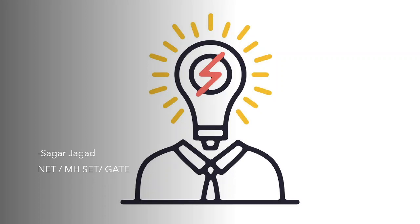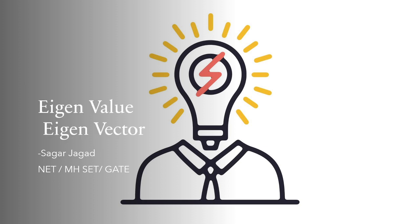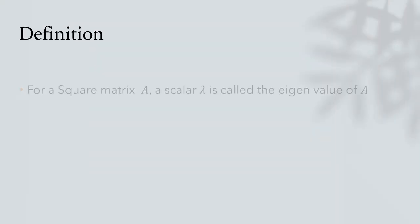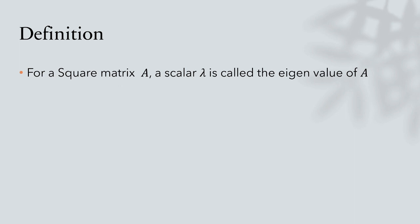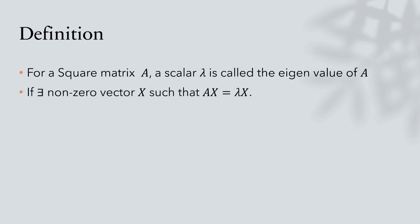Hello dear friends, welcome to this video. In this series I'll be discussing some standard reference book problems for the topic of eigenvalues and eigenvectors. First let me define what is an eigenvalue and eigenvector. The definition goes like this: for a square matrix A, a scalar lambda is called the eigenvalue of A if you can find a nonzero matrix X such that AX equals lambda X.